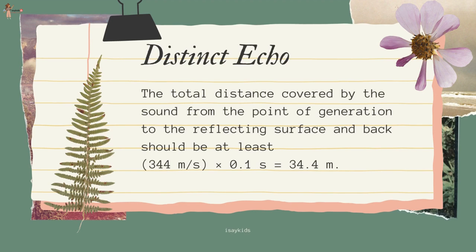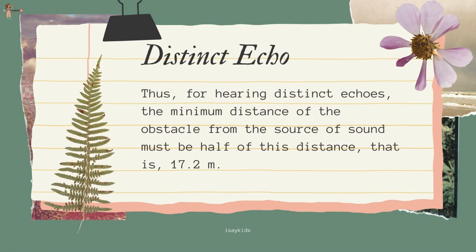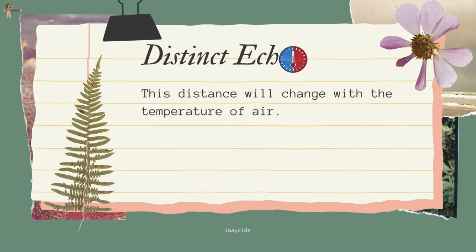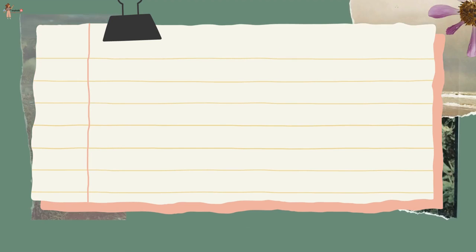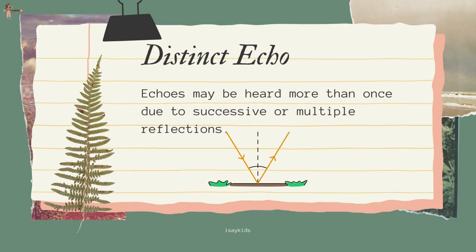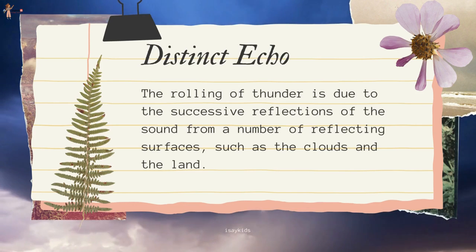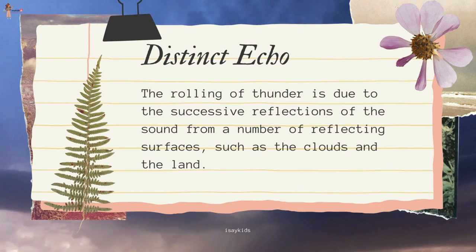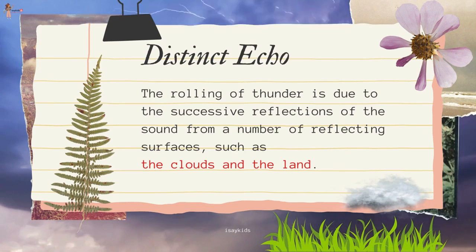The total distance covered by the sound from the point of generation to the reflecting surface and back should be at least 344 × 0.1 = 34.4 meters. Thus, for hearing distinct echoes, the minimum distance of the obstacle from the source of sound must be half of this distance, i.e., 17.2 meters. This distance will change with the temperature of air. Echoes may be heard more than once due to successive or multiple reflections. The rolling of thunder is due to the successive reflections of the sound from a number of reflecting surfaces, such as the clouds and the land.